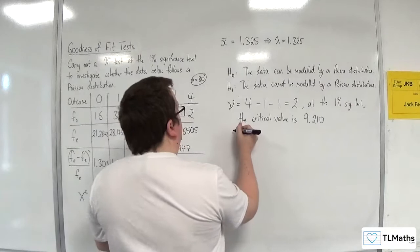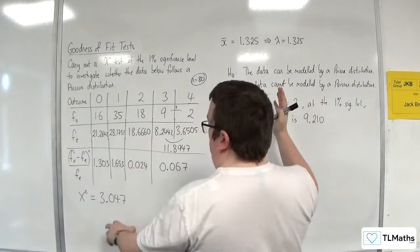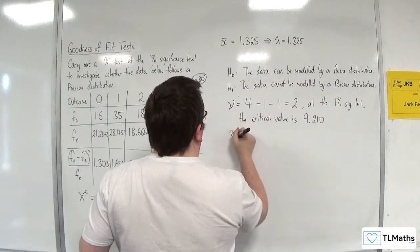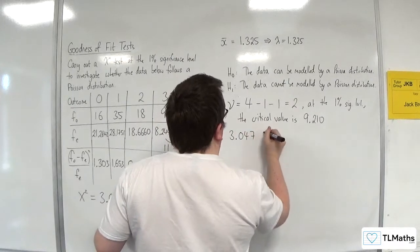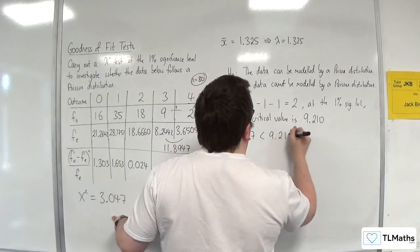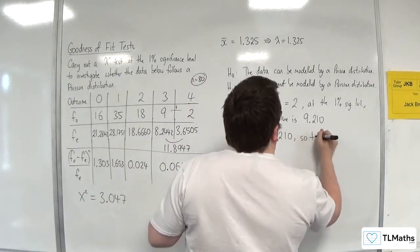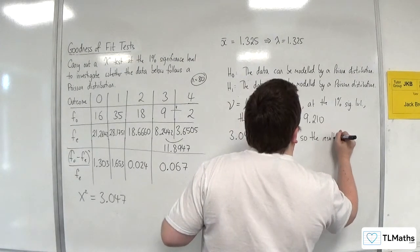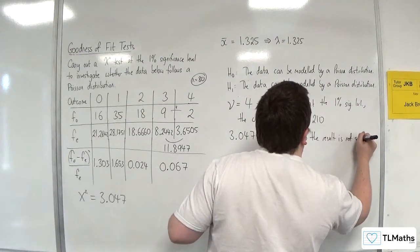So then we're comparing 3.047. So 3.047 is clearly less than 9.210. So the result is not significant.